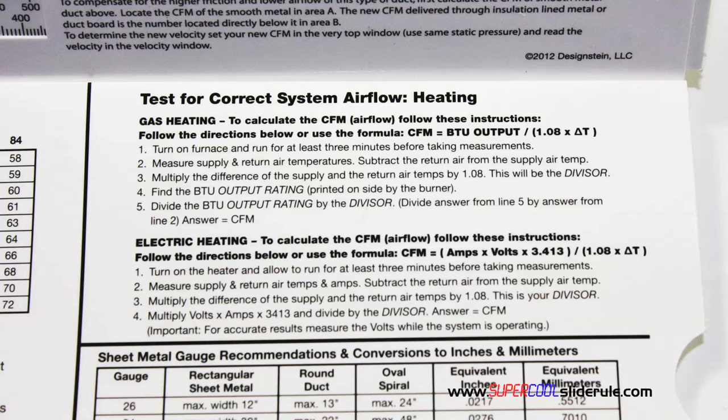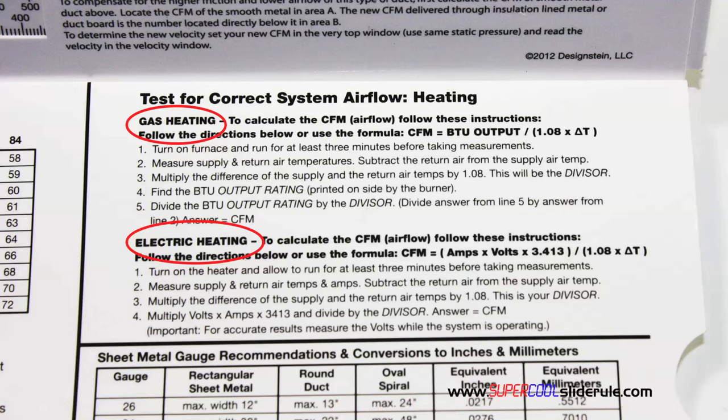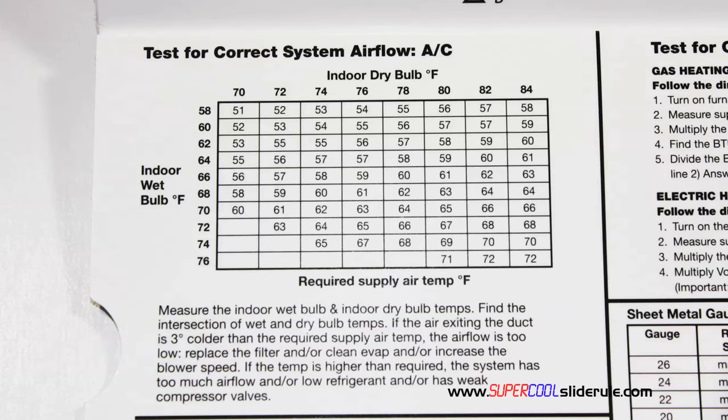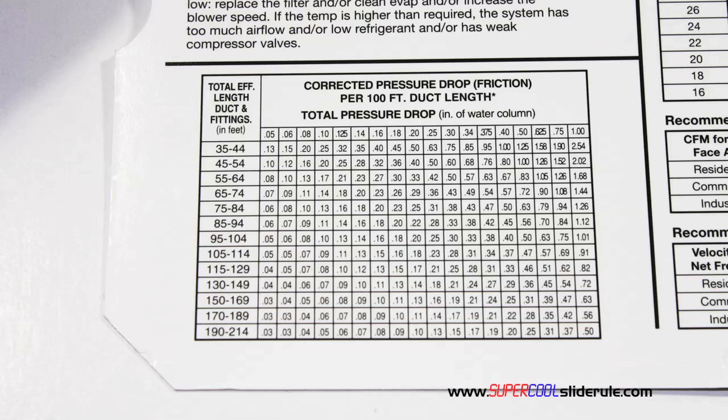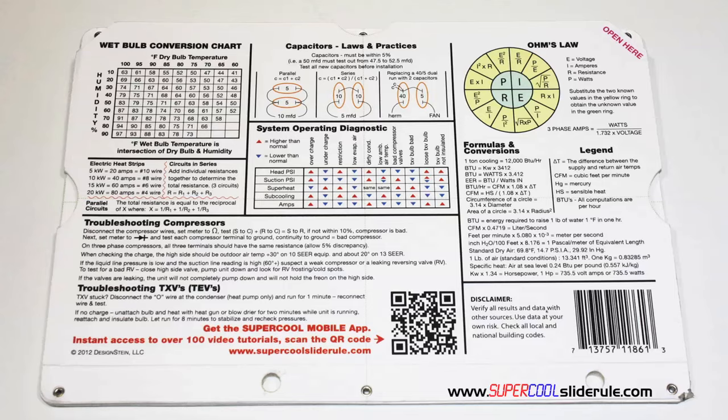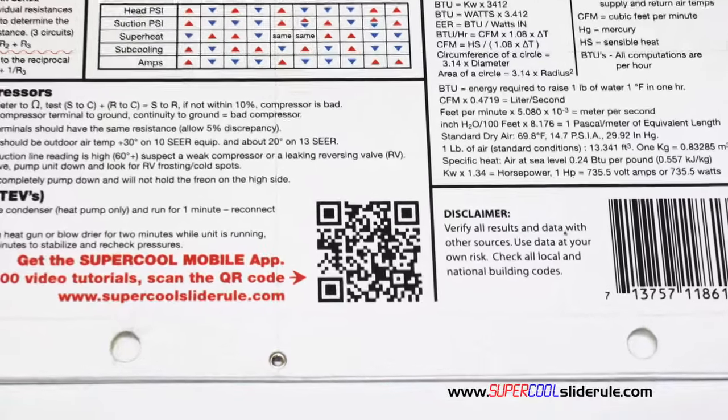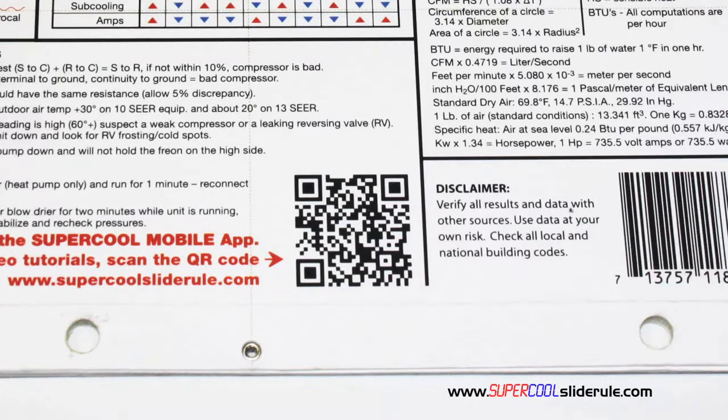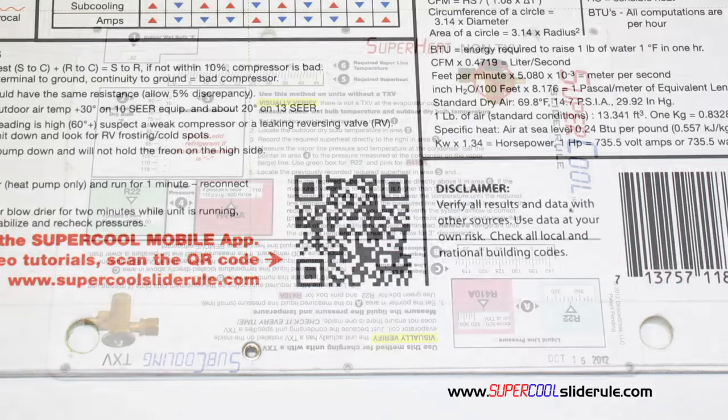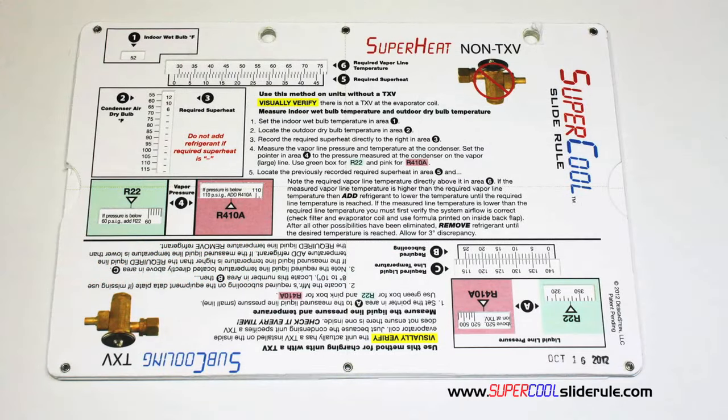It has step-by-step directions for determining airflow through a gas furnace, electric furnace, or an air conditioning unit. It has pressure drop multipliers for ductwork, as well as recommended velocities. And finally, the scanning of this QR code gives instant access to over 100 tutorials to assist the technician with every test and repair imaginable. You owe it to yourself, as well as your customers, to own this tool.